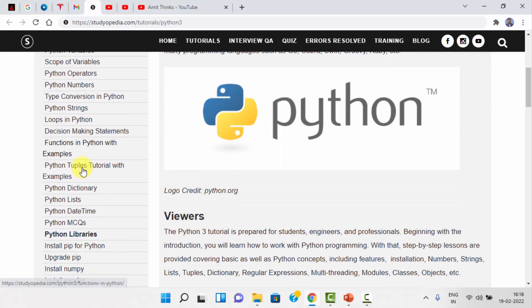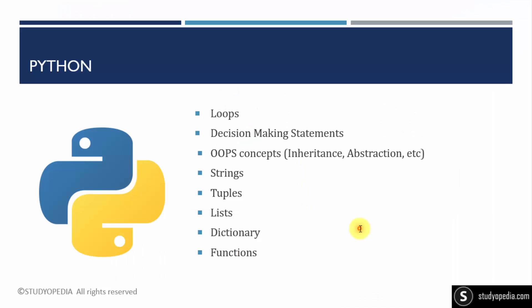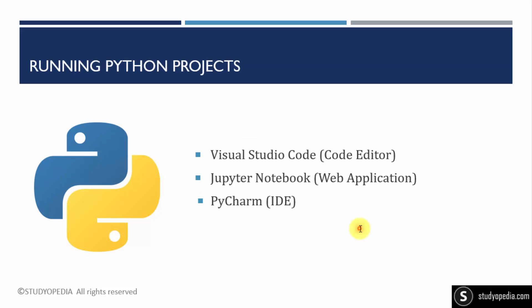You can go to the website and work around Python introduction, installations, variables, scope of variables, operators, loops, decision-making statements, Python functions, tuples, dictionary, and lists — this covers the basics of Python. After that you can work around other Python topics, including file handling and lambda functions. Then you can begin running your Python projects.